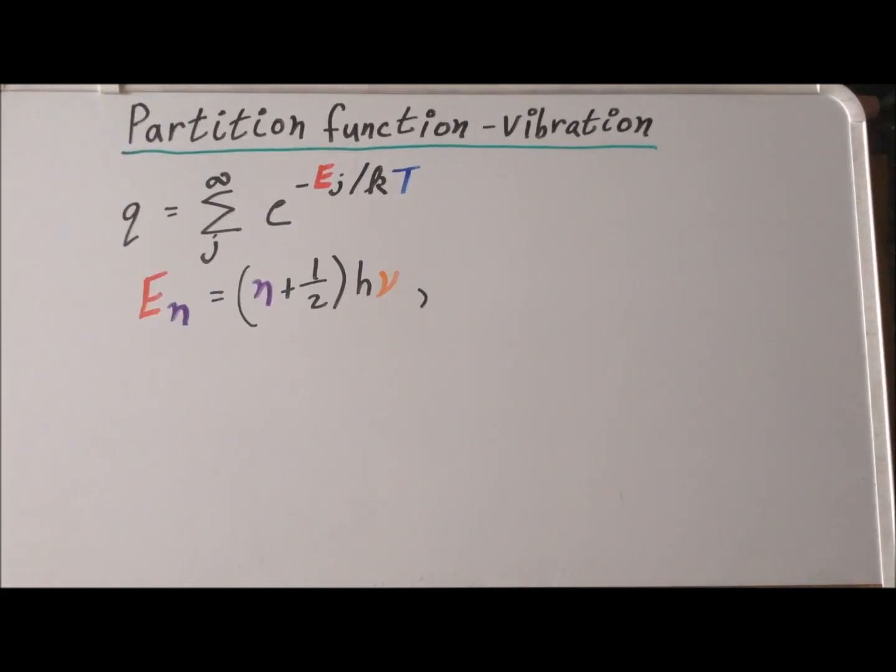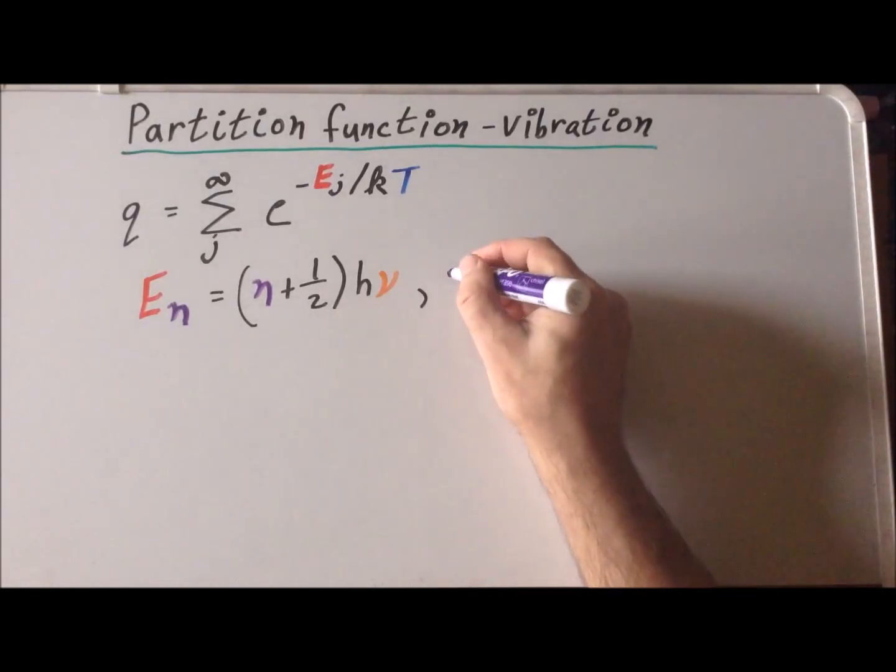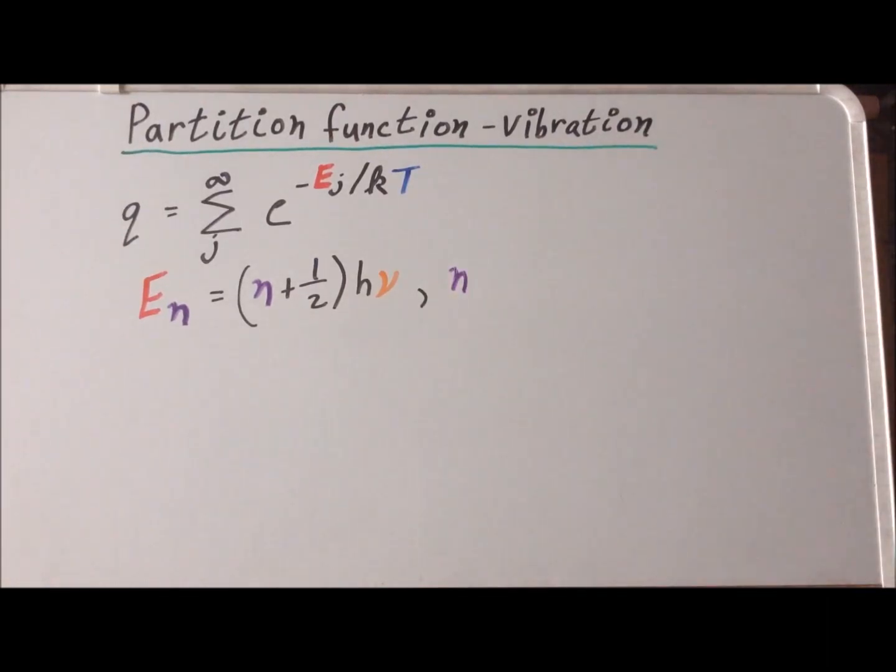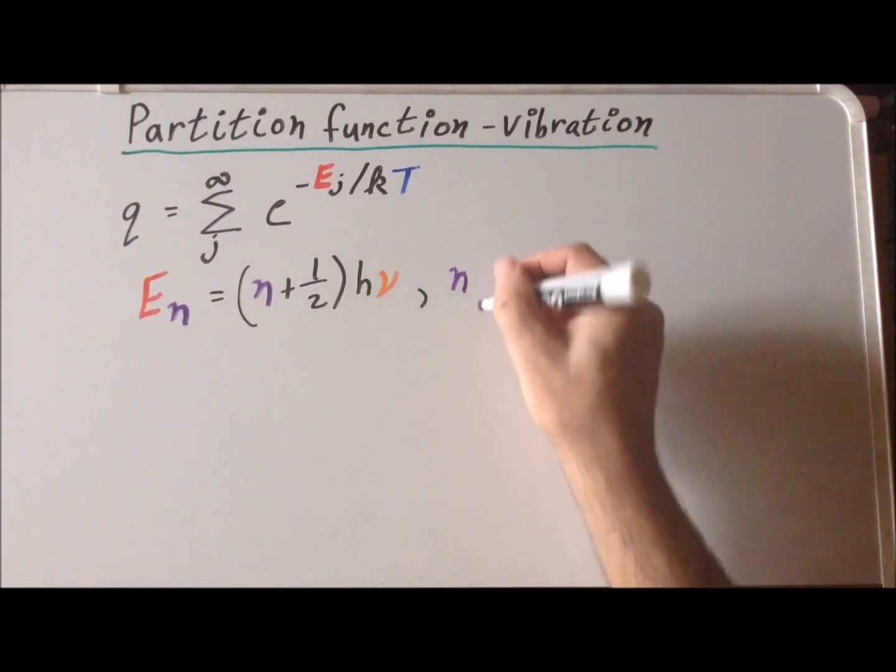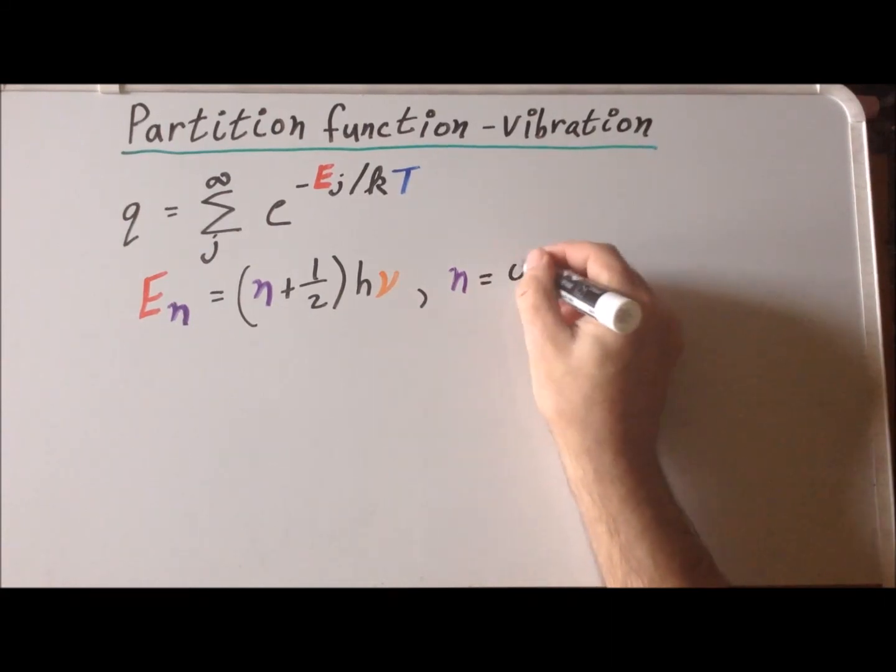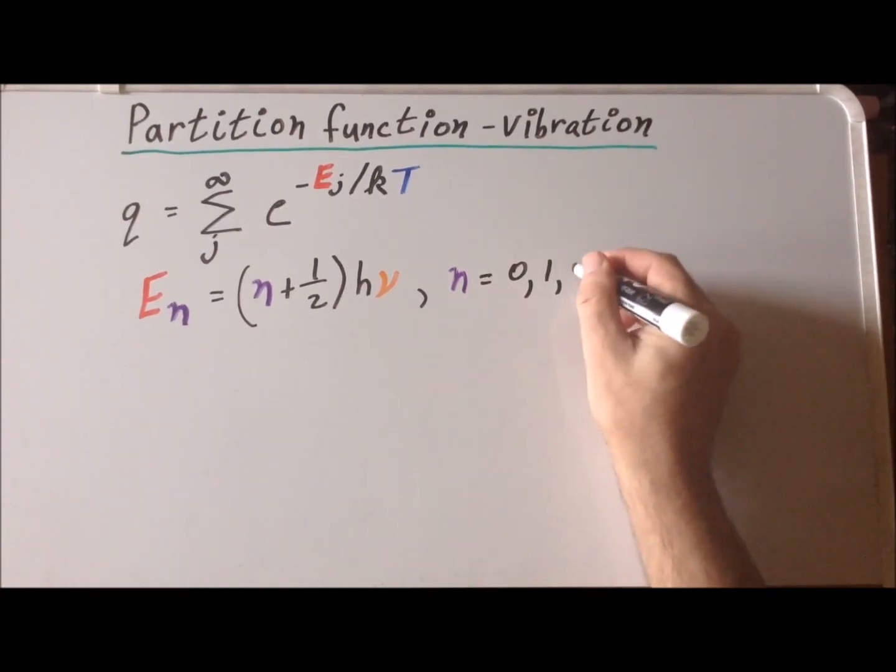We have found from theory the energies of the levels of the quantum harmonic oscillator. So this is E sub n, depends upon n, and it's this quantity n plus a half times h nu, where h is Planck's constant and nu is the frequency of the vibration. Even more than that, we know that the allowed values of n start at zero and then we continue with the increasing positive integers.